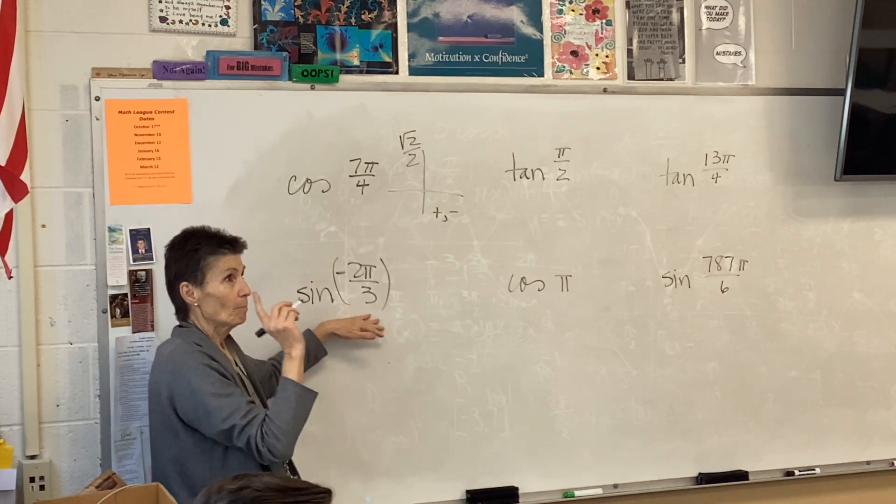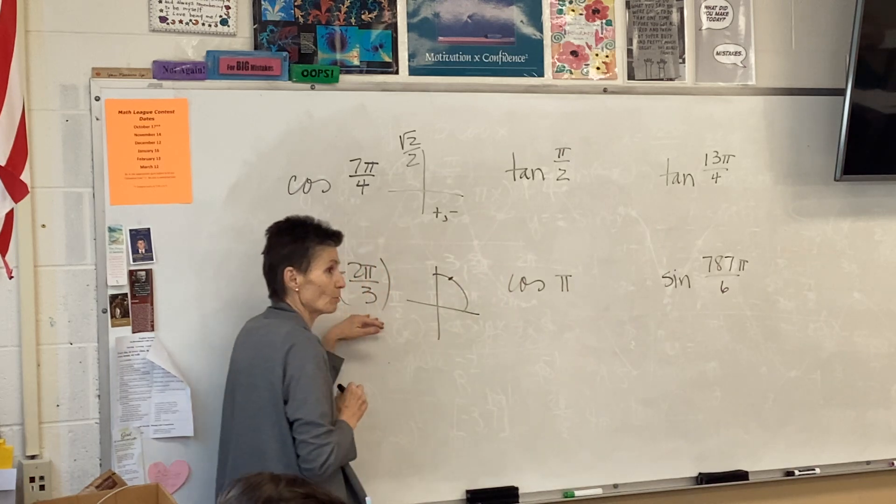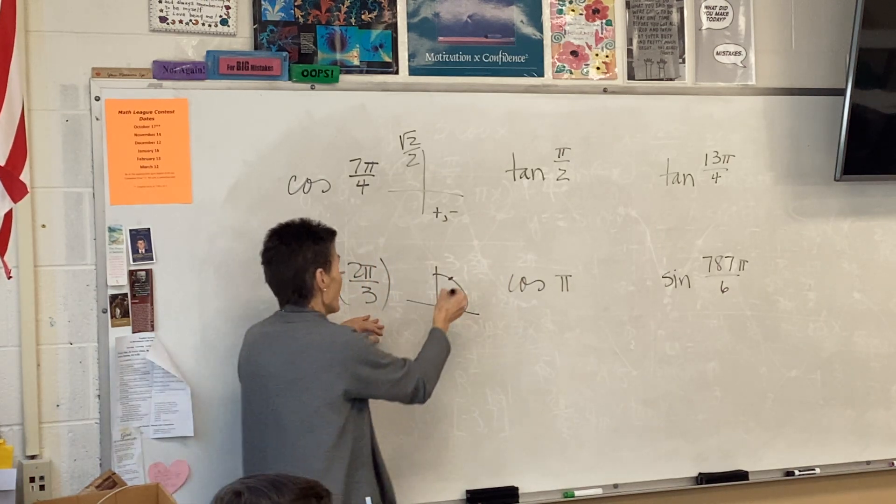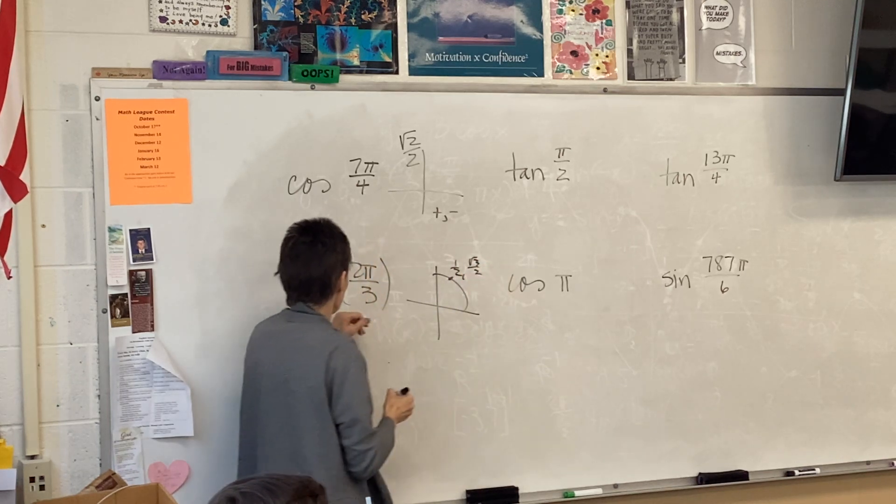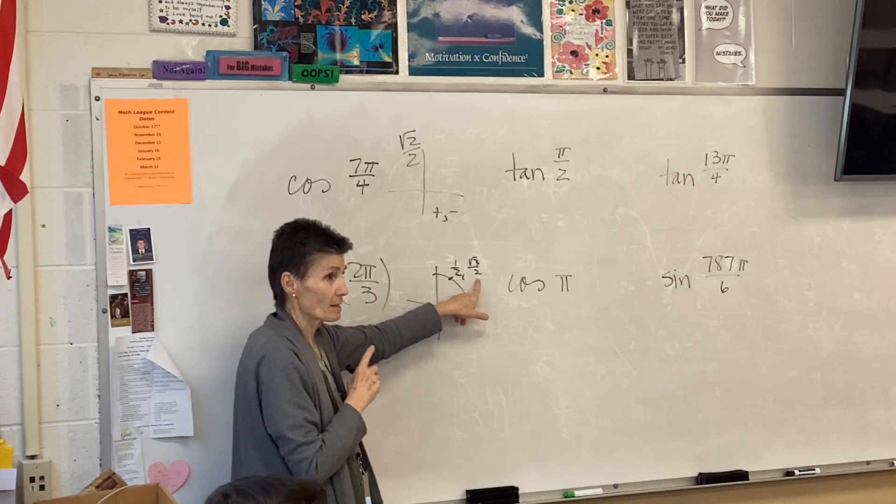Alright, π over 3. Know your points here. There's the π over 3. That one is 1 half, √3 over 2. This is a sine problem. Sine is y.